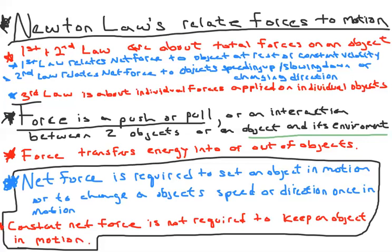If you ask yourself what is it about a net force that makes an object speed up or slow down — or what is it when a force is applied but doesn't make an object speed up or slow down — that all has to do with how much energy that force is giving or not giving the object.